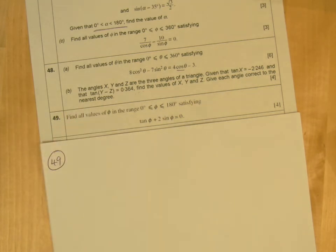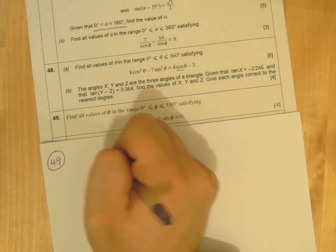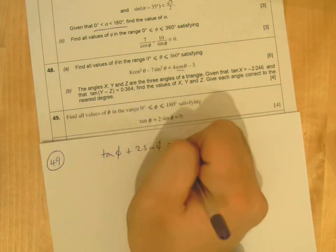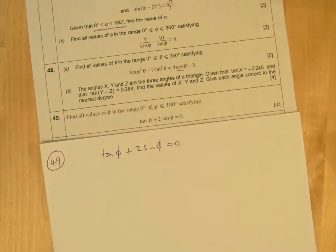Question 49, we've got tan φ + 2sin φ = 0. We're not going to use that sin²φ + cos²φ = 1 relationship in this particular question.